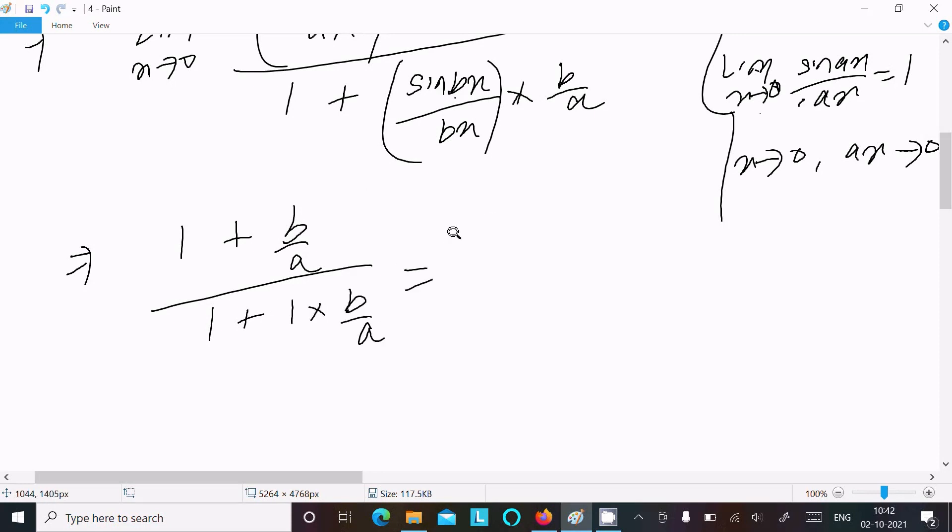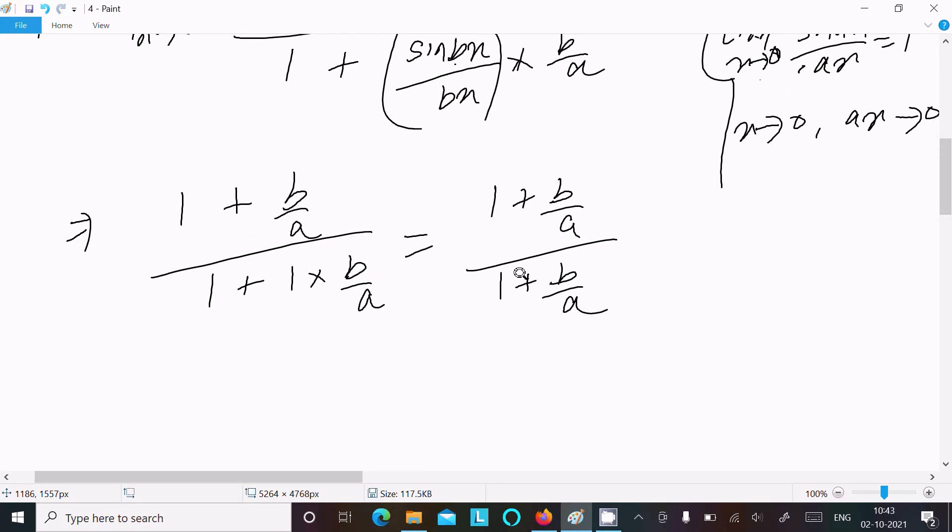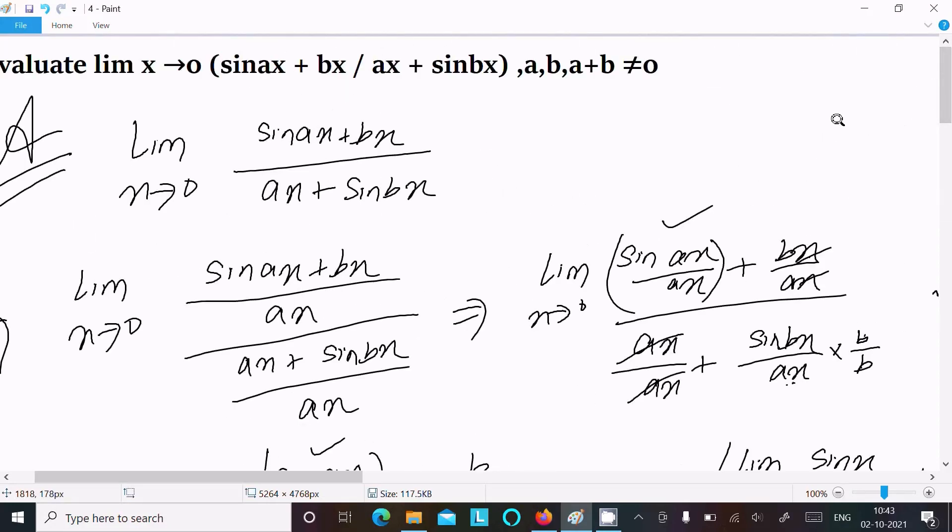We can write it as (1 + b/a)/(1 + b/a). These terms are the same, so they cancel, returning 1. This is how we find the limit for this question.